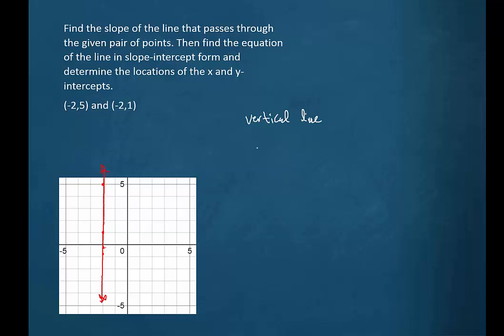And if we were to try to find the slope, let's do that using the slope formula. We would call this dot x1, y1, and this one x2, y2. Plug the values in, and we'd have 1 minus 5 over minus 2 minus negative 2. So we'd have minus 4 over 0. Now this is undefined.